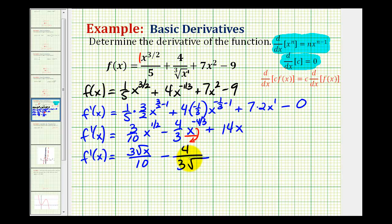So the index would be three, and we'd have x to the fourth, plus fourteen x.